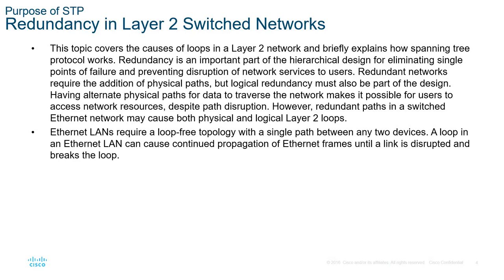Basically, when you have three devices connected to one another, you can have what's called a loop — a physical loop of three devices. The issue is, if one device is forwarding broadcasts, it actually creates a broadcast storm, because it'll start forwarding all these frames at all its interfaces, and all of the receiving devices will get them and forward them out, and so forth. So it actually consumes all of the resources on the different devices. The goal of STP is to provide redundancy in a layer 2 network without having a physical loop.